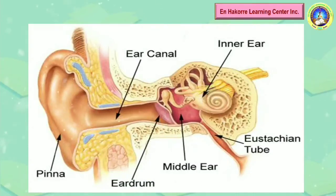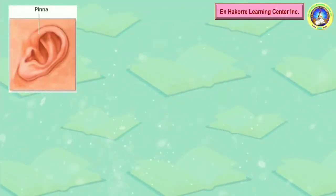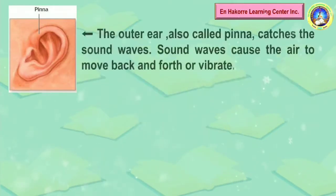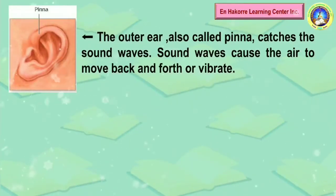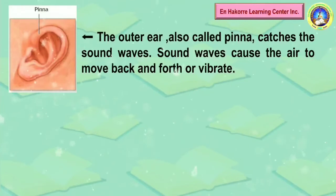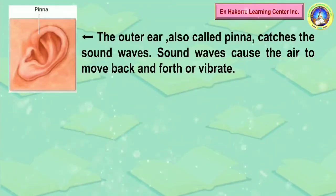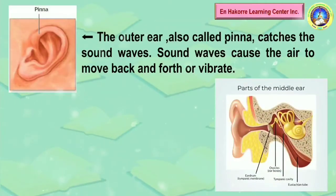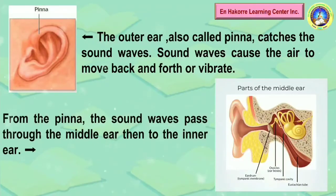Let's now discuss the functions of the different parts of the ear. The outer ear is also called the pinna — it catches the sound waves. When you hear sound, it comes first through your pinna. The sound waves cause the ear to vibrate — to move back and forth — so that you can hear sounds from all around you.